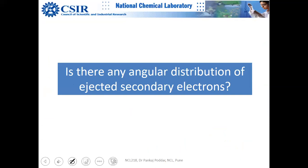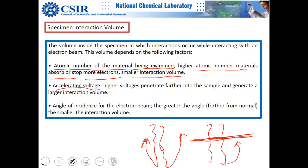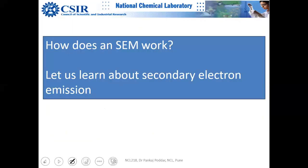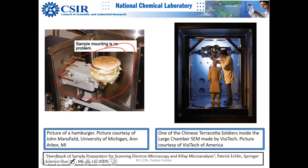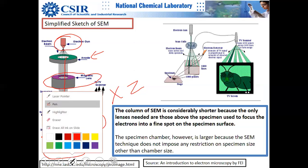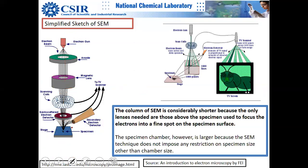Regarding the angular distribution of ejected electrons: past students have asked why the secondary electron detector is placed at one corner rather than somewhere else. This question also relates to the elastic interaction between primary electrons and sample atoms, from which you can calculate the angular distribution.